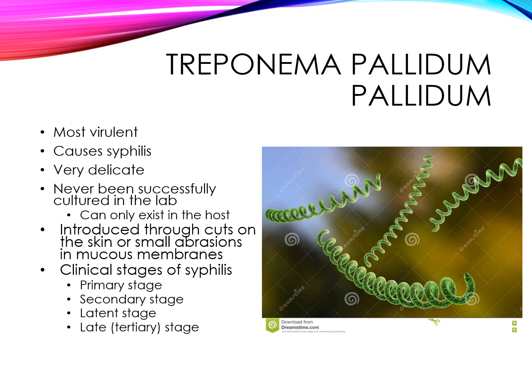Historically, without knowing the origin of the disease, different countries would blame syphilis on their neighbors, referring to it as Italian pox by the French, and the English called it French pox. Famous figures suspected of having syphilis include George Washington, Adolf Hitler, and Napoleon Bonaparte. Prior to the 1900s, syphilis was treated with arsenic, which was very toxic. Today, we typically treat with penicillin and tetracycline. There are four stages: the primary stage, secondary stage, latent stage, and late tertiary stage.